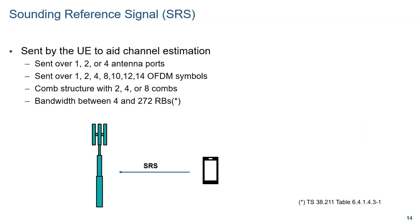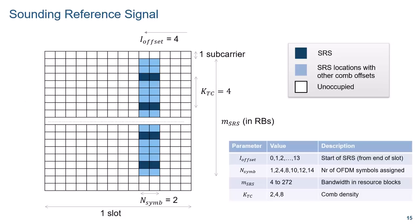Let's first look at the structure of the SRS. This slide summarizes some of the main points in terms of antenna ports, length in OFDM symbols, comb structure, and bandwidth. The SRS is transmitted over one or several symbols and it occupies a comb structure every two, four, or eight resource elements — here we picked four. The location of those SRS symbols is anywhere within the slot, with consecutive symbols assigned in case there are more than one.